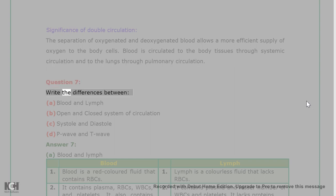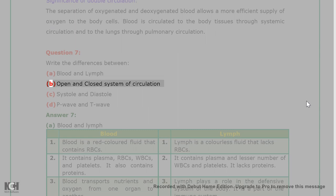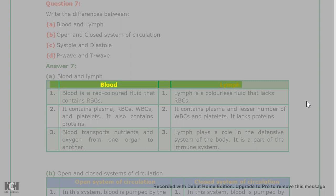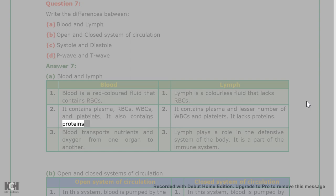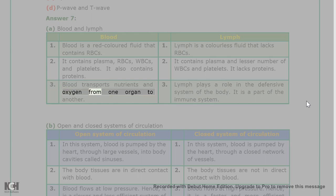Question 7A: Differences between blood and lymph. Blood is a red-colored fluid containing RBCs; lymph is a colorless fluid that lacks RBCs. Blood contains plasma, RBCs, WBCs, and platelets, and also contains proteins; lymph contains plasma and a lesser number of WBCs and platelets, and lacks proteins. Blood transports nutrients and oxygen from one organ to another; lymph plays a role in the defensive system of the body and is part of the immune system.